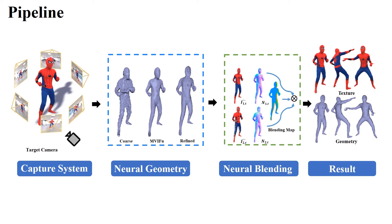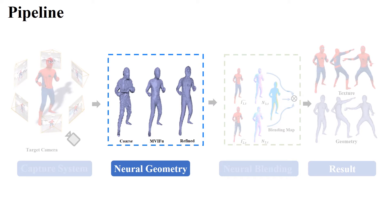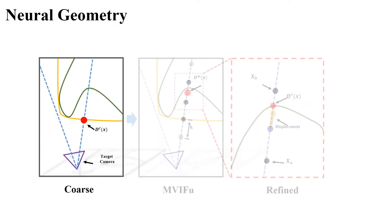For the neural geometry stage, we use a coarse-to-fine strategy to enable real-time geometry reconstruction in novel views. Firstly, we apply the shape-from-silhouette algorithm to obtain the coarse geometry, which speeds up the reconstruction process by removing background pixels.